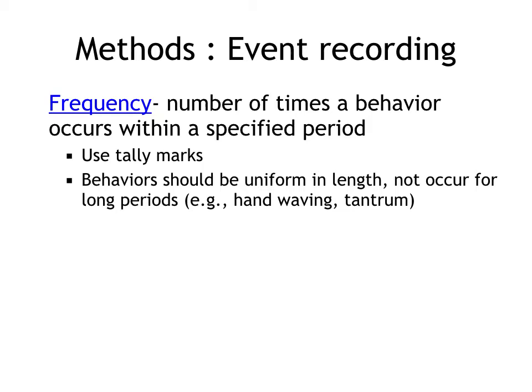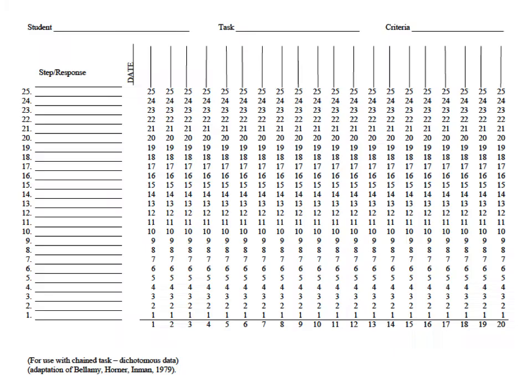Remember, if you want to use frequency, the behavior should be uniform in length so you can count it. It shouldn't occur for long periods. Behaviors like hand waving or tantrums happen for a long time, so these are not good examples of behavior for frequency. This is a sample data sheet you can use. We will practice briefly next week in class when we meet again.